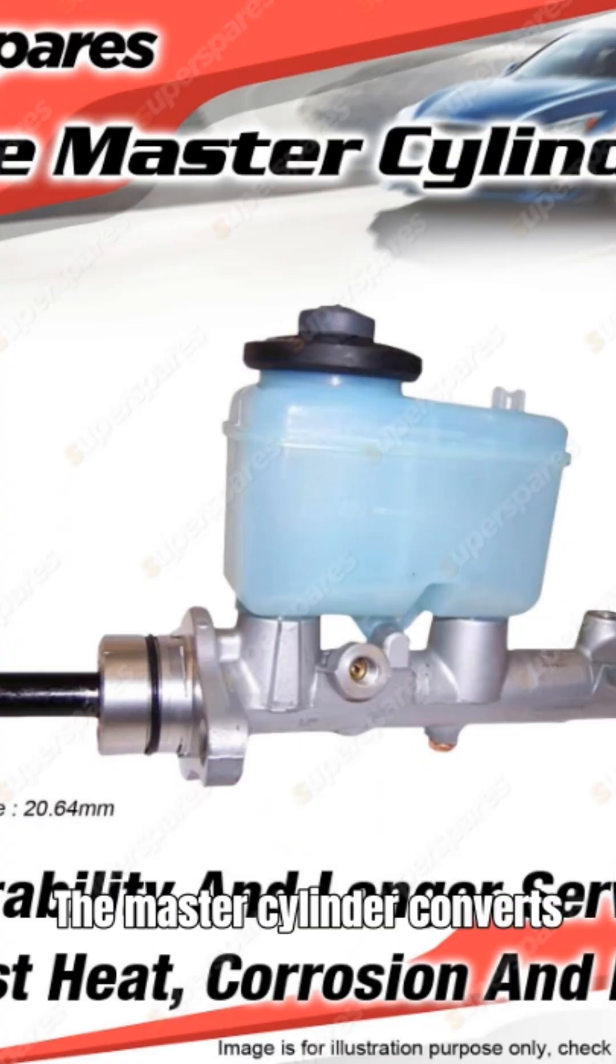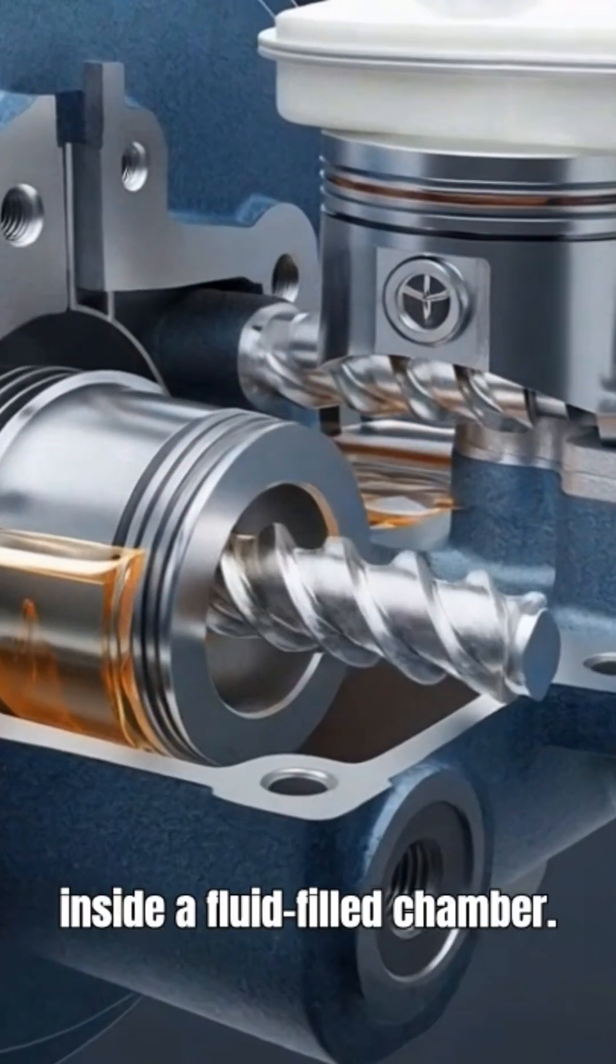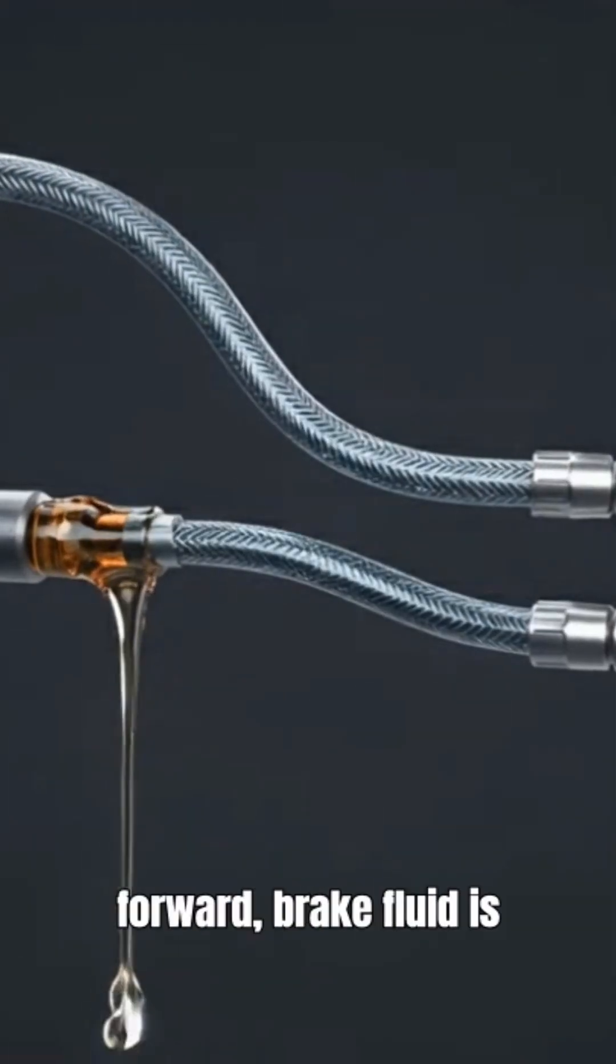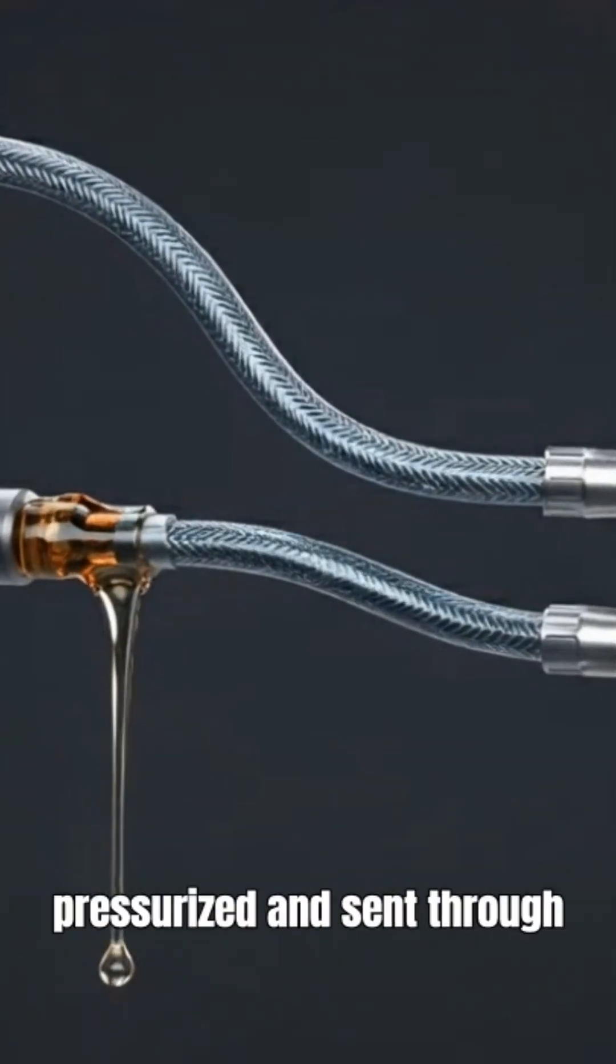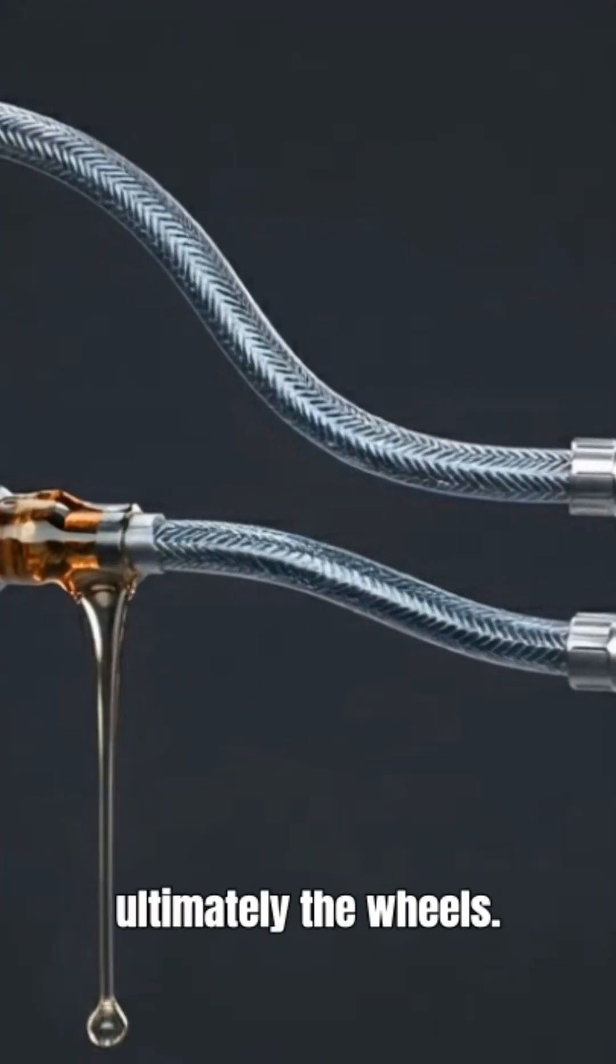The master cylinder converts mechanical force into hydraulic pressure. It uses one or two pistons that move inside a fluid-filled chamber. As the piston moves forward, brake fluid is pressurized and sent through the brake lines to the ABS module and ultimately the wheels.